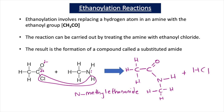This slide shows the reaction between an acid chloride and a primary amine. Here we have ethanoyl chloride and methyl amine. The primary amine is a nucleophile because there is a lone pair of electrons on the nitrogen, which is attracted to the delta-plus carbon of the acid chloride. Hydrogen chloride is eliminated and we form the substituted amide N-methyl ethanamide. So my two products are N-methyl ethanamide and hydrogen chloride gas.